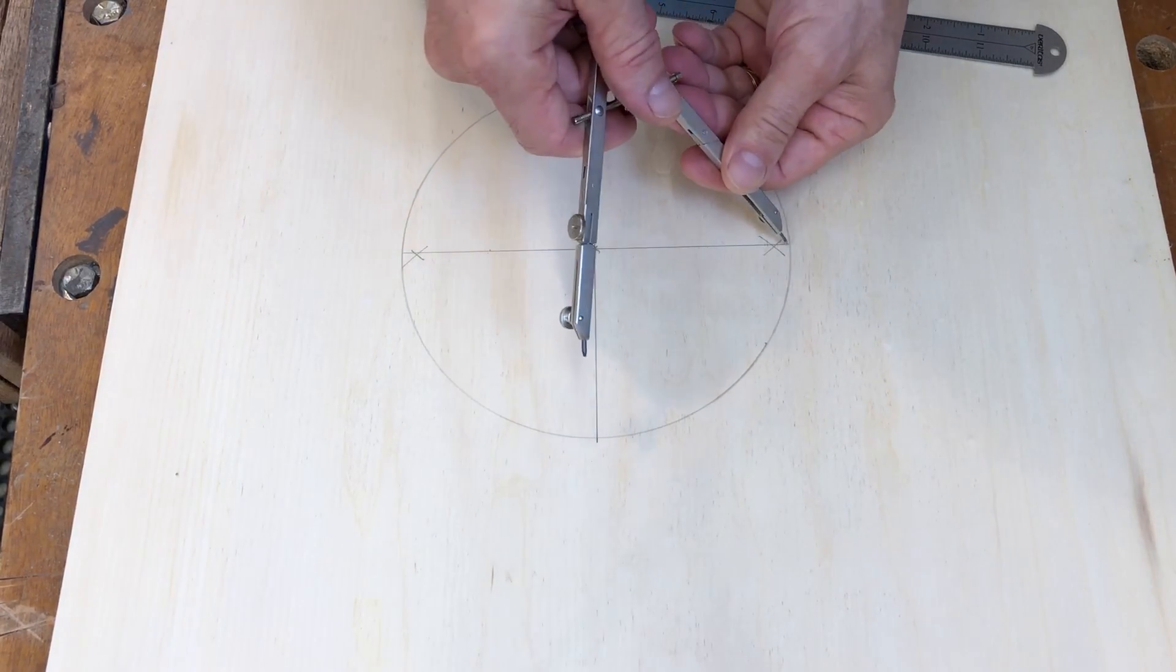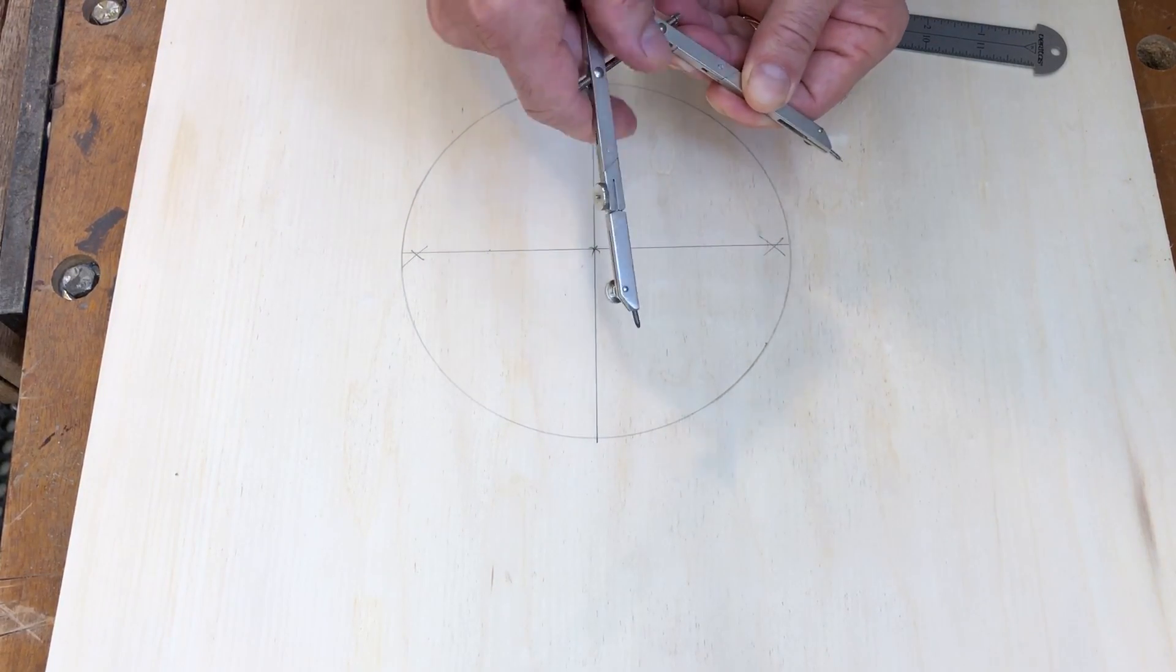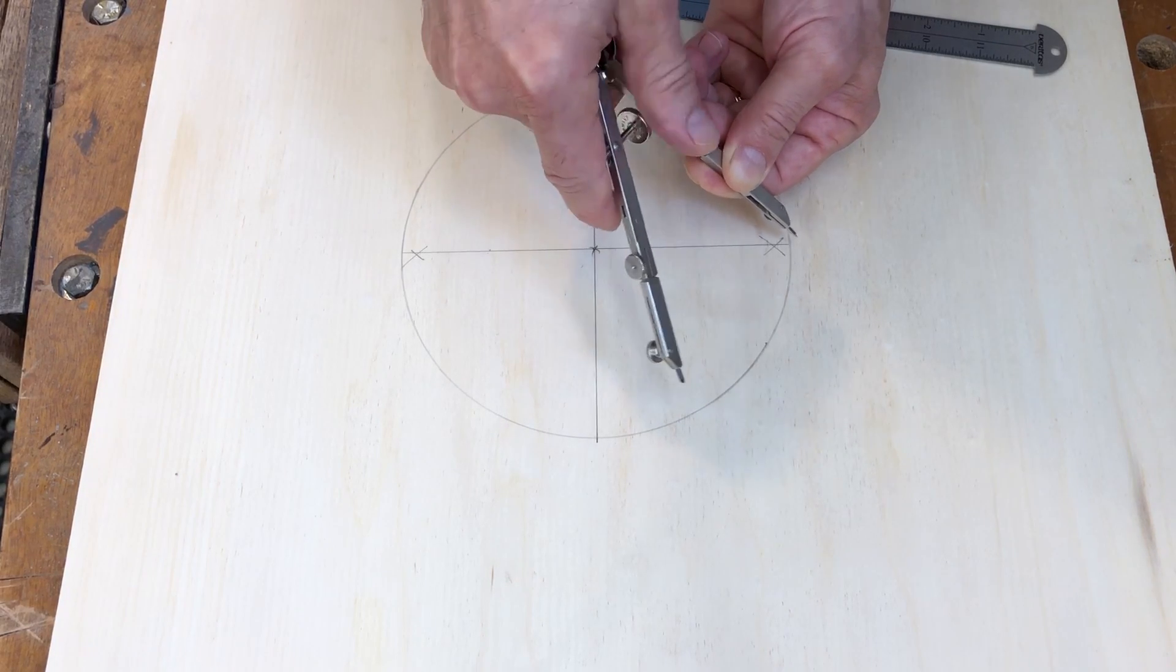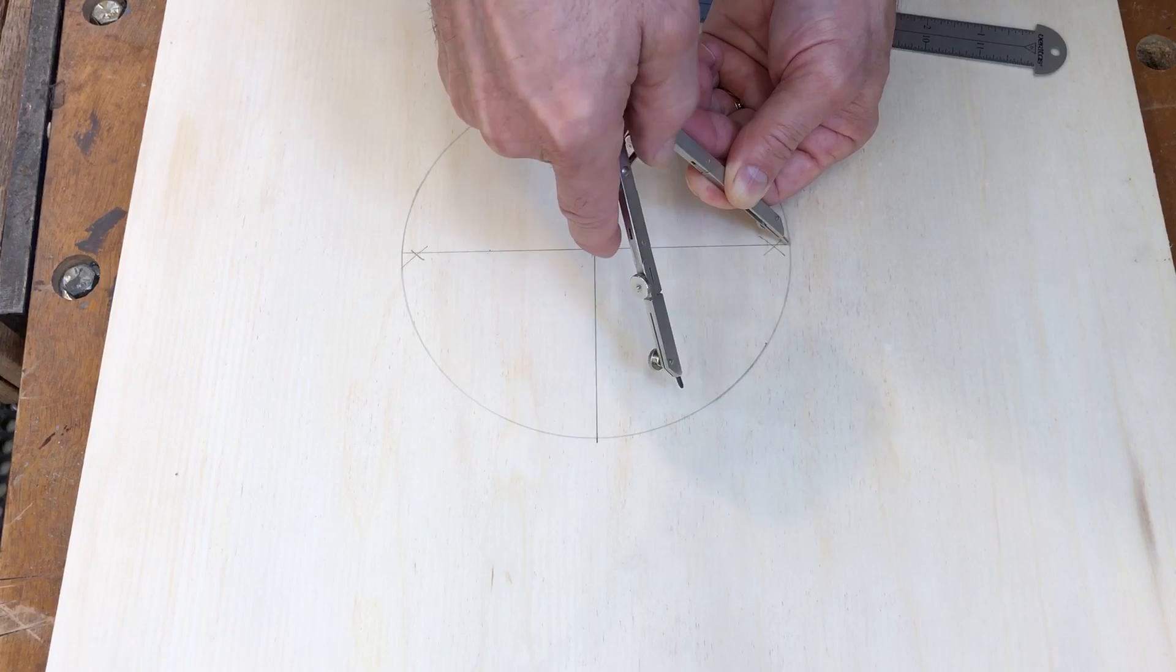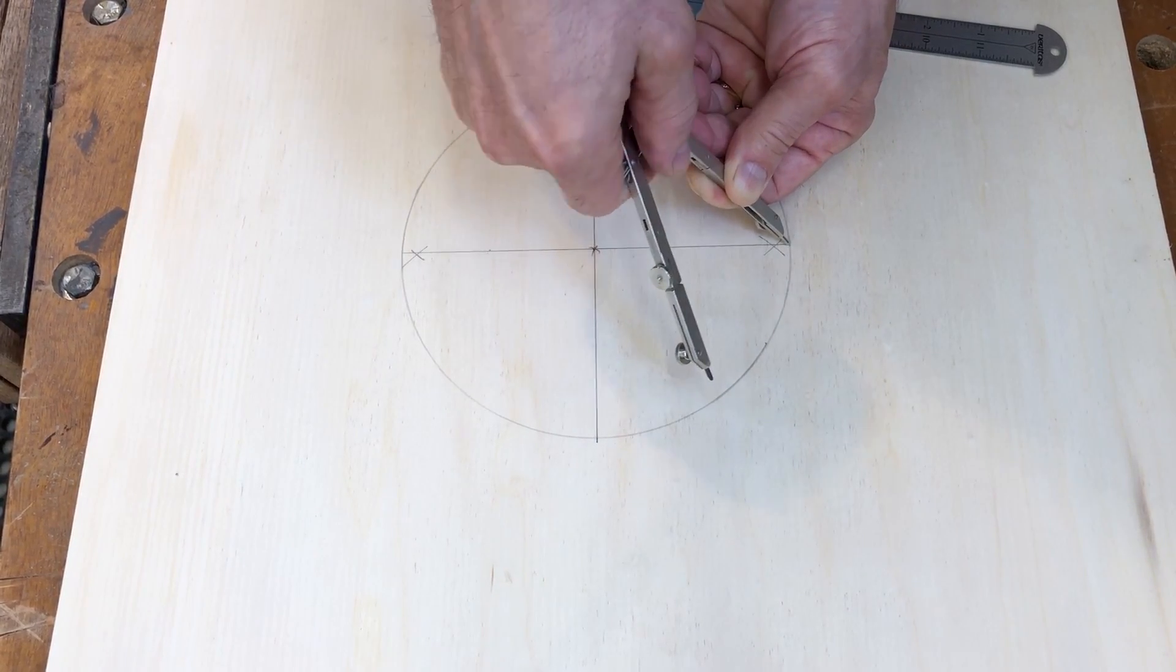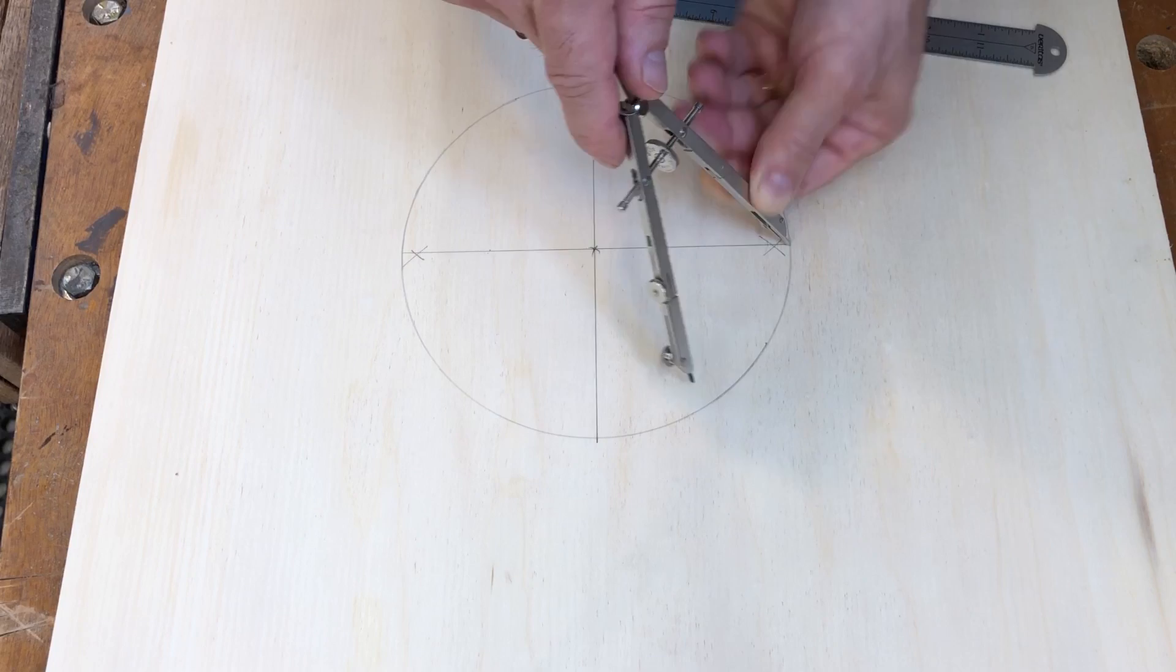To get to the eight, we're going to divide our quarters. So we just set the compass again for an arbitrary measurement, about half the distance between these two points. Doesn't even have to be close. So there's that measurement.